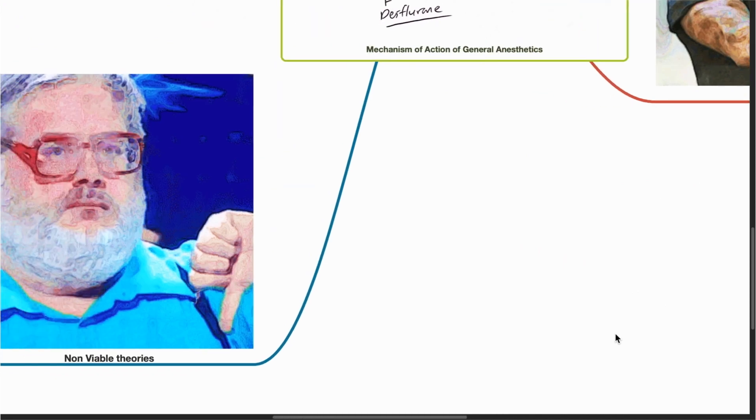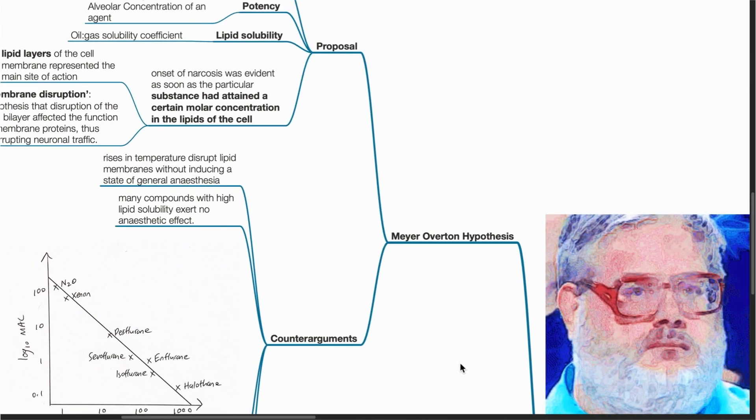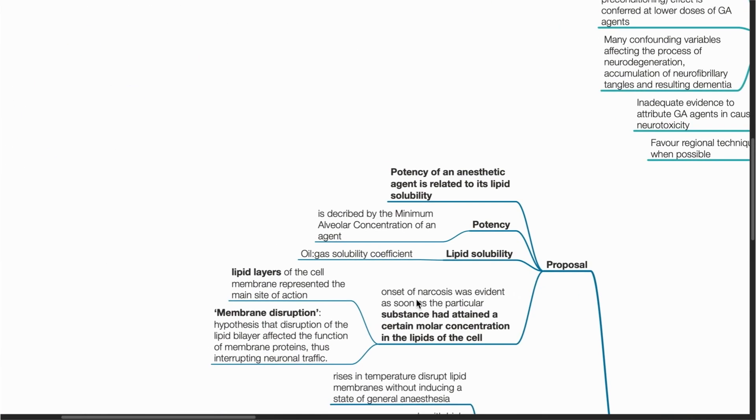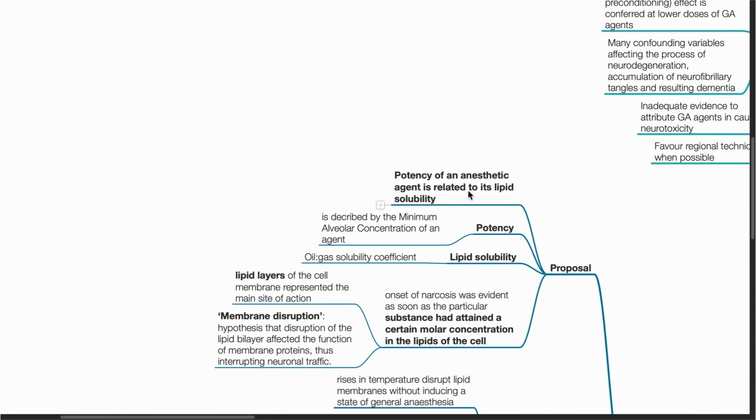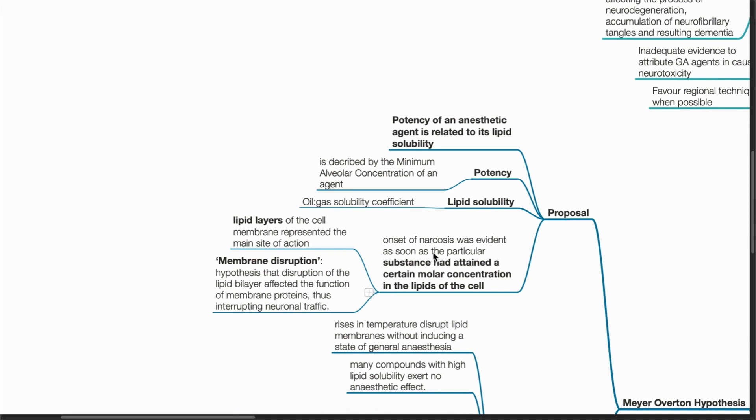We move on to non-viable theories. The Meyer-Overtone hypothesis proposes the potency of an anesthetic agent is related to its lipid solubility. The potency is measured by the MAC of an agent, while the lipid solubility is measured by the oil-gas solubility coefficient. The onset of narcosis was evident in experiments as soon as the particular substance had attained a certain molar concentration in the lipids of the cell.